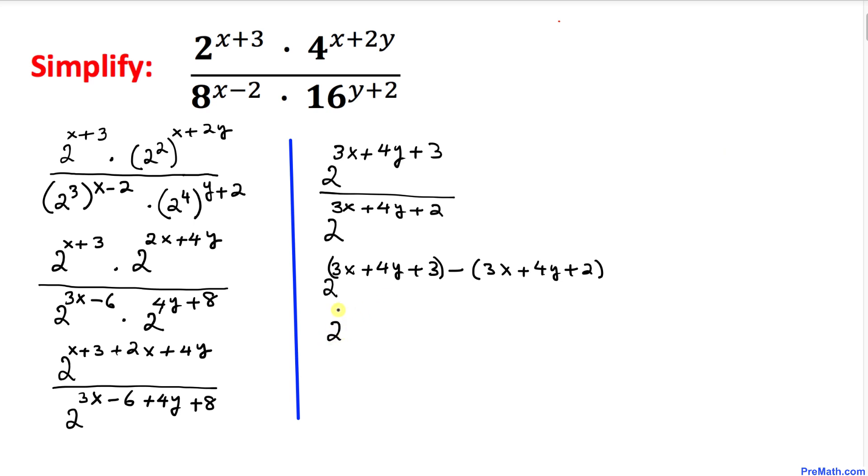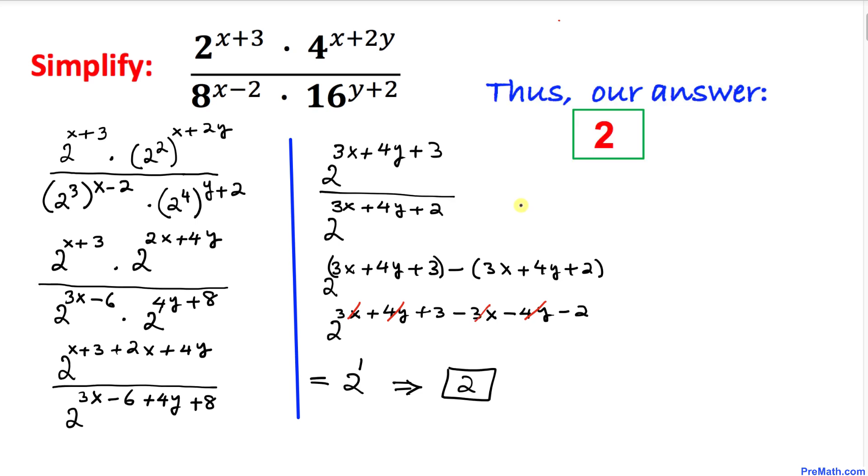So we have 2^(3x+4y+3-3x-4y-2). Distributing the negative sign gives -3x-4y-2. The 3x cancels with -3x, and 4y cancels with -4y, so we end up with 2^(3-2) = 2^1 = 2. Thus, our simplified answer is 2.